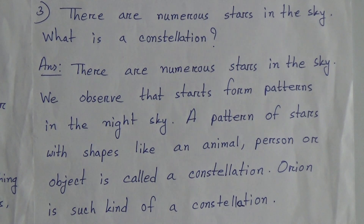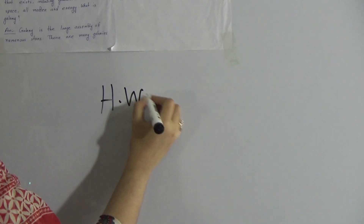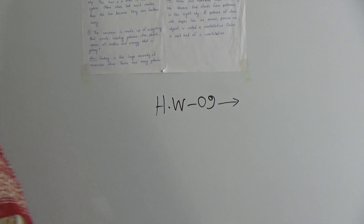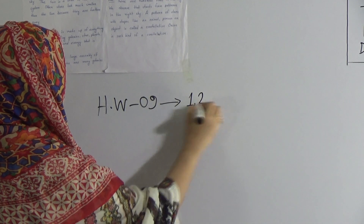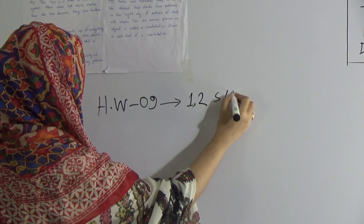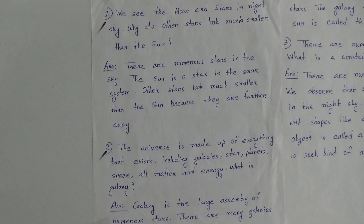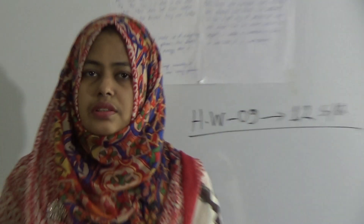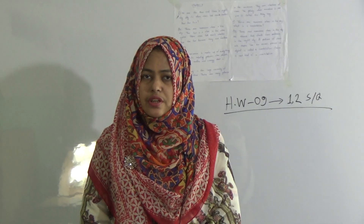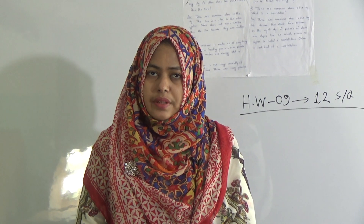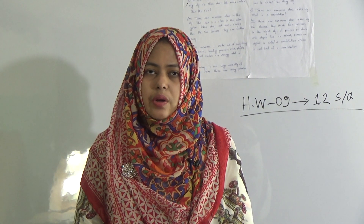Students, I have finished today's topic. Now I will give you the homework. Our today's HW number is 9. The HW will be short questions number 1 and 2. I hope you have understood today's topic. Keep practicing at home and do your assigned HW in your HW copy. Stay home and we will see you again in our next class.